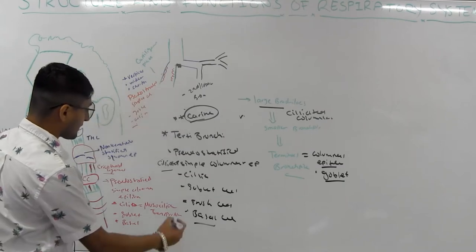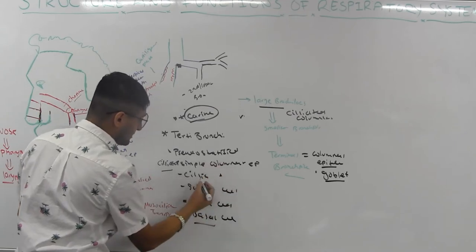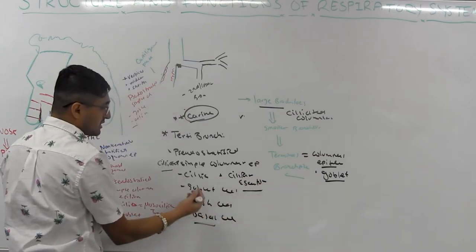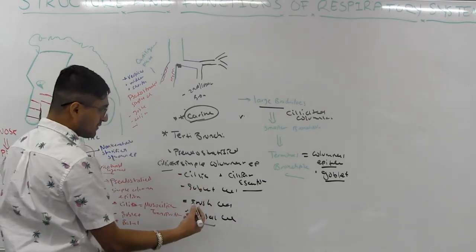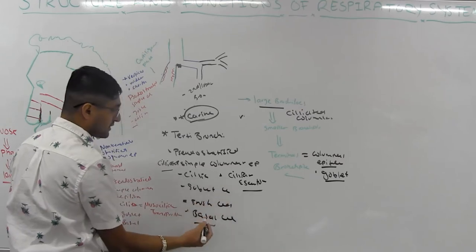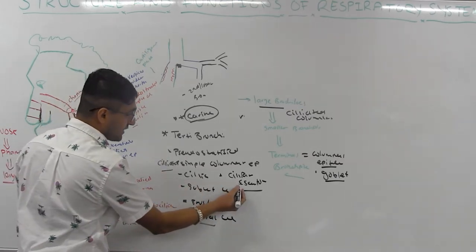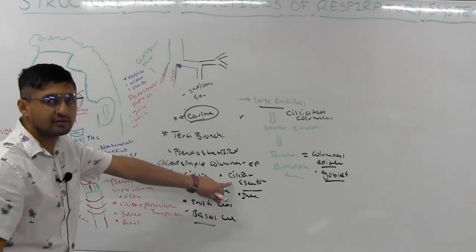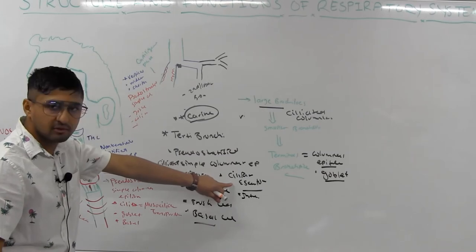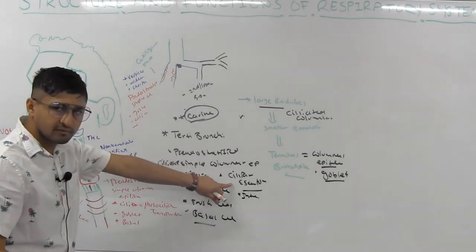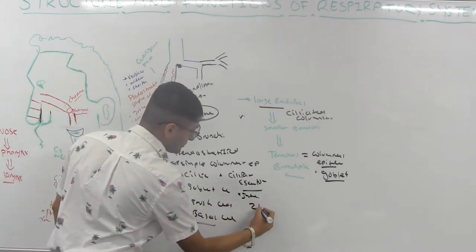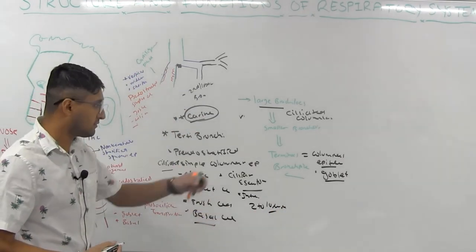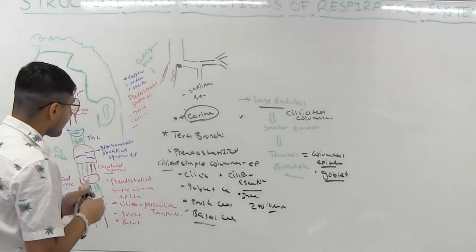There's also a ciliary escalator. Whenever goblet cells produce mucus — maybe due to prostaglandins or histamines — the ciliary escalator moves it up and out, eventually sending it to the intestines or stomach. The ciliary escalator can expel particles ranging from about 2 to 10 micrometers. Particles less than 2 micrometers will reach the alveoli.